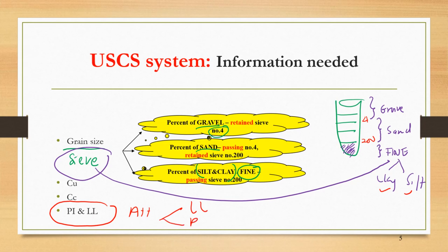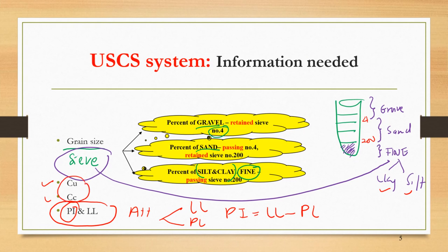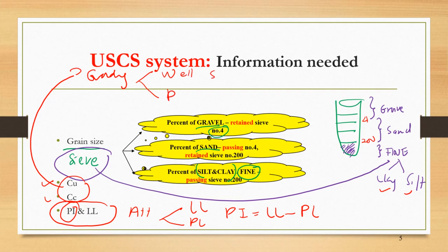From the Atterberg limit test you obtain the liquid limit (LL) and plastic limit (PL), then calculate the plasticity index (PI = LL − PL). Additionally, you need the coefficients Cu and Cc for grading purposes — these are used to further describe coarse-grained soil, for example, as well-graded gravel, poorly graded sand, or poorly graded gravel. This is all the information needed to classify your soil based on USCS.